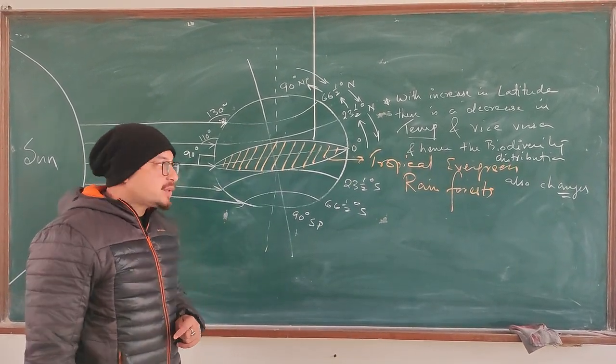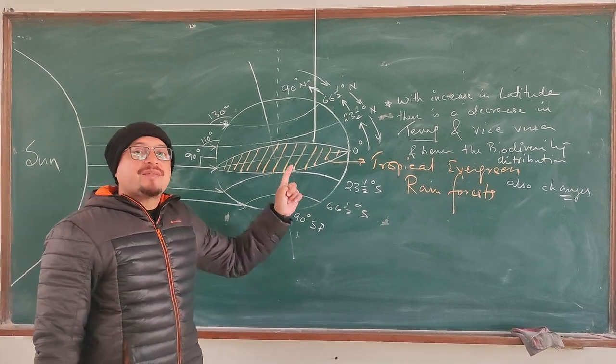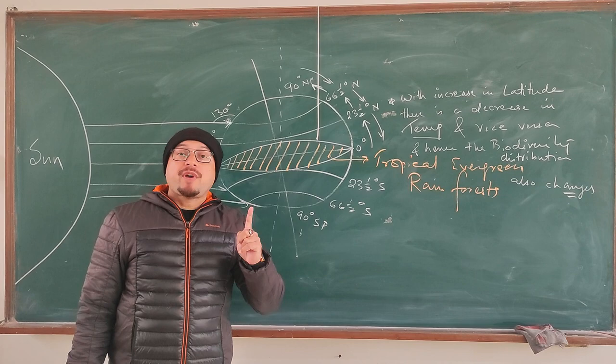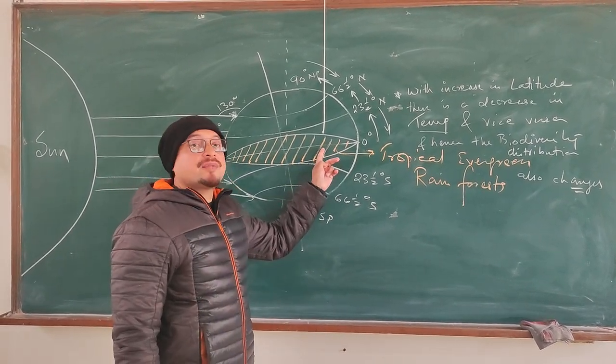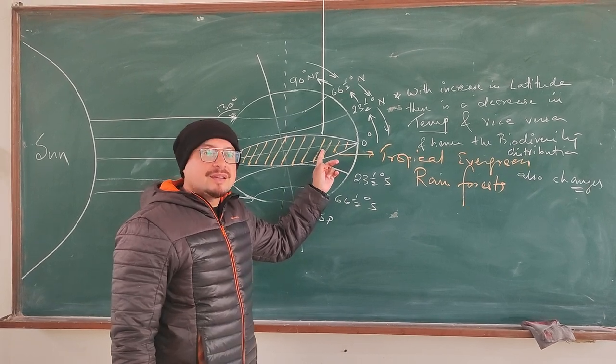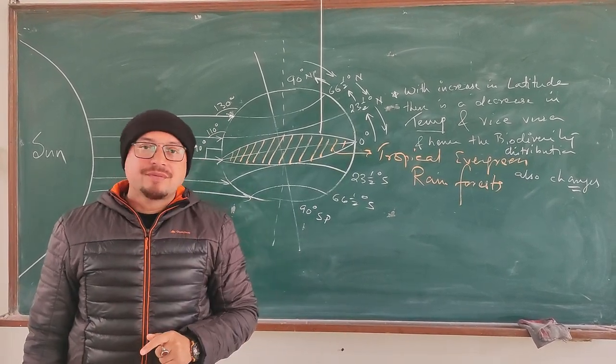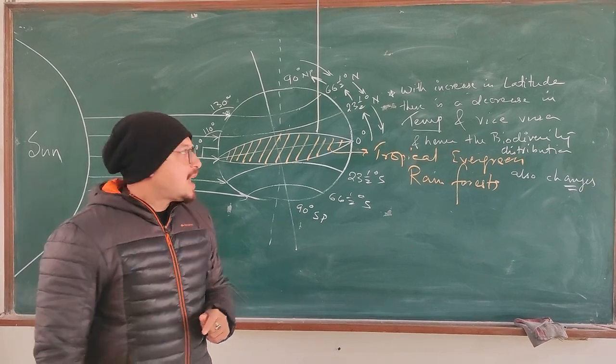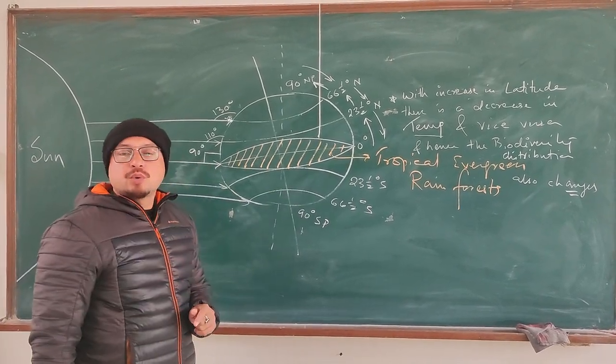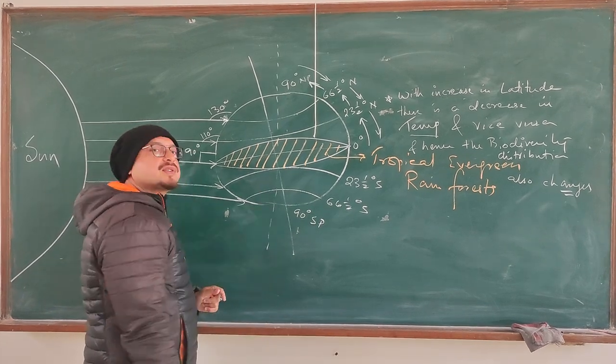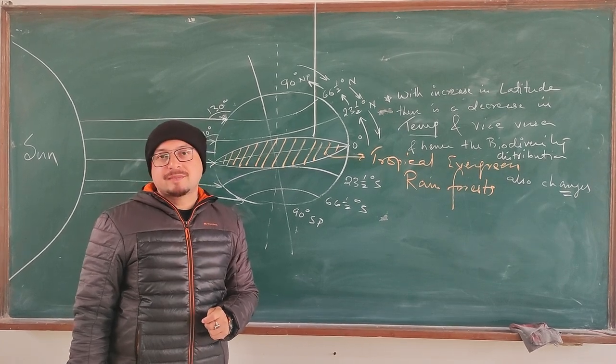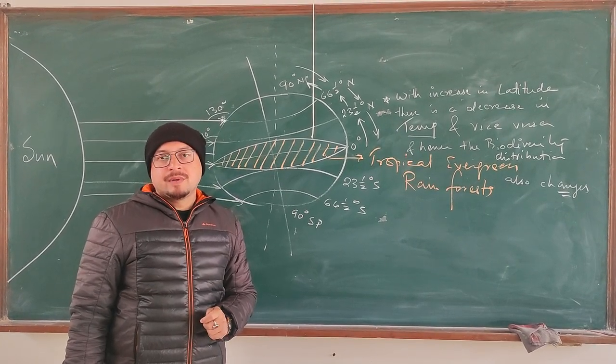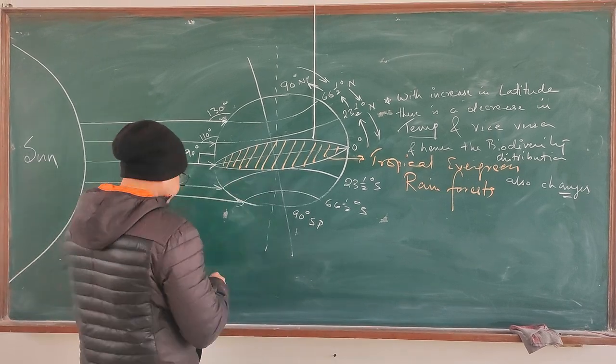It means the equatorial region, since they have a hot and humid condition, would favor the growth of biodiversity. So most of the biodiversity is concentrated in the tropical evergreen rainforest. And as we move up towards the pole or towards the south pole, the temperature decreases and biodiversity also decreases. Now let's move up.